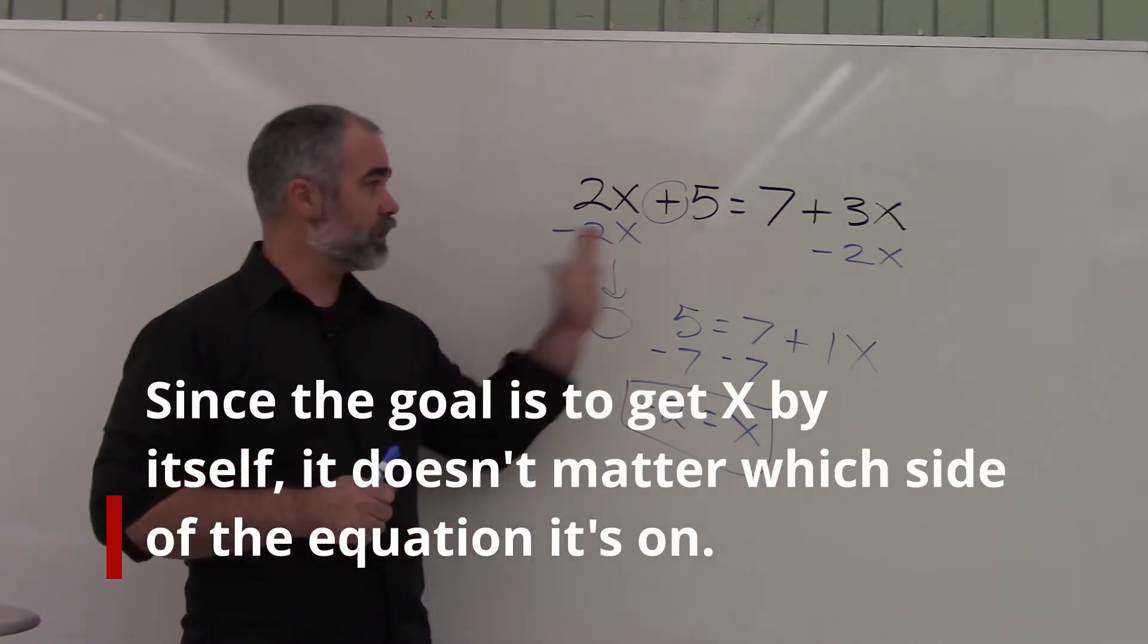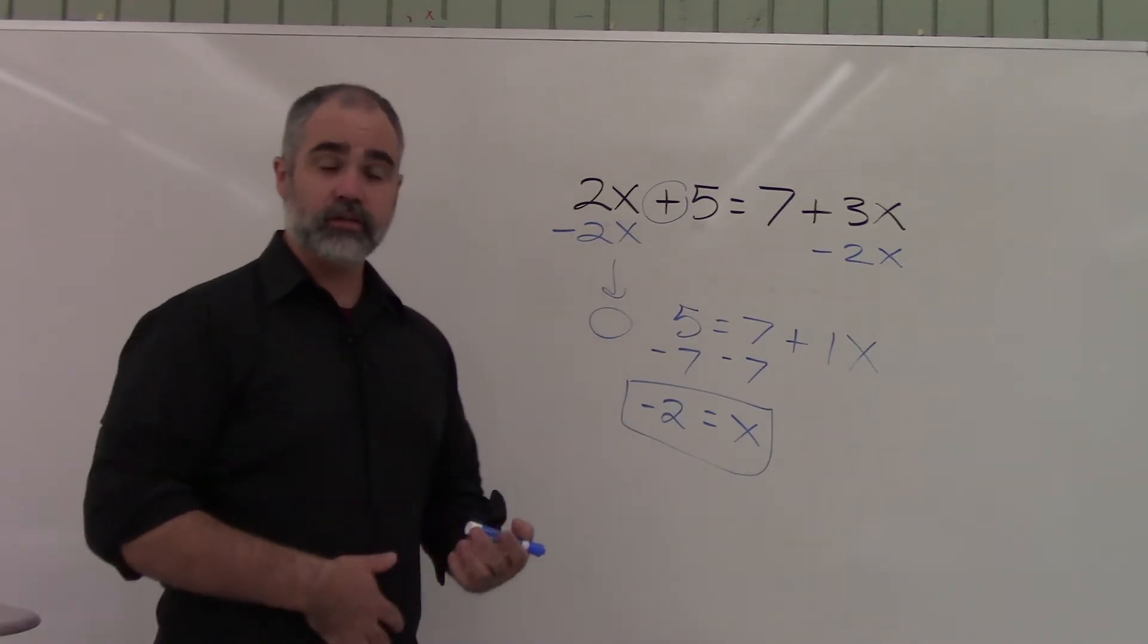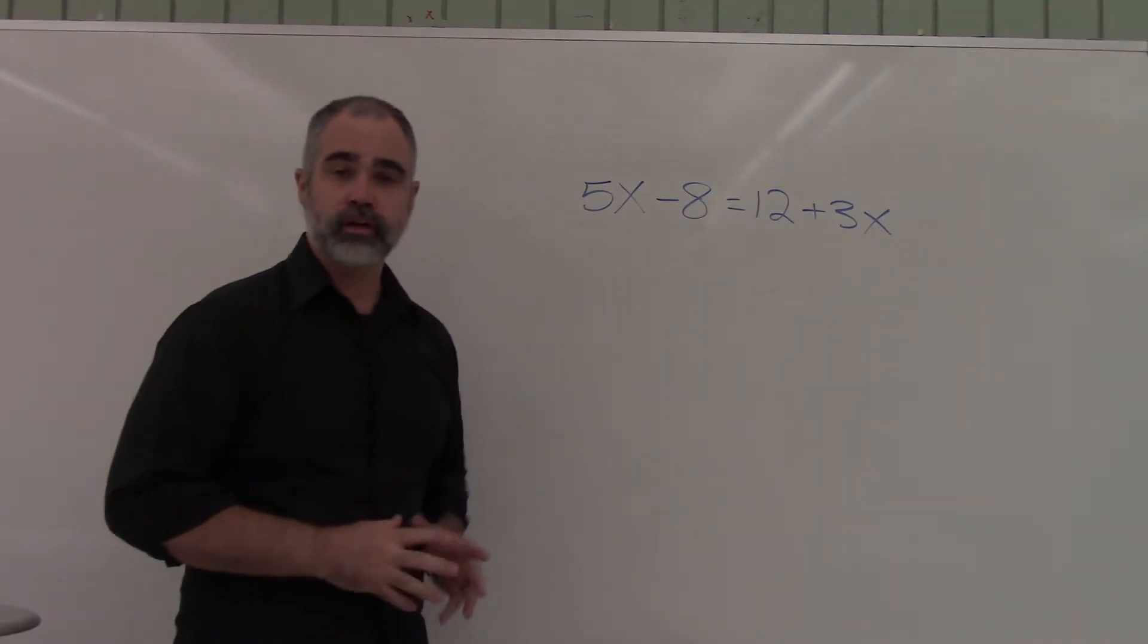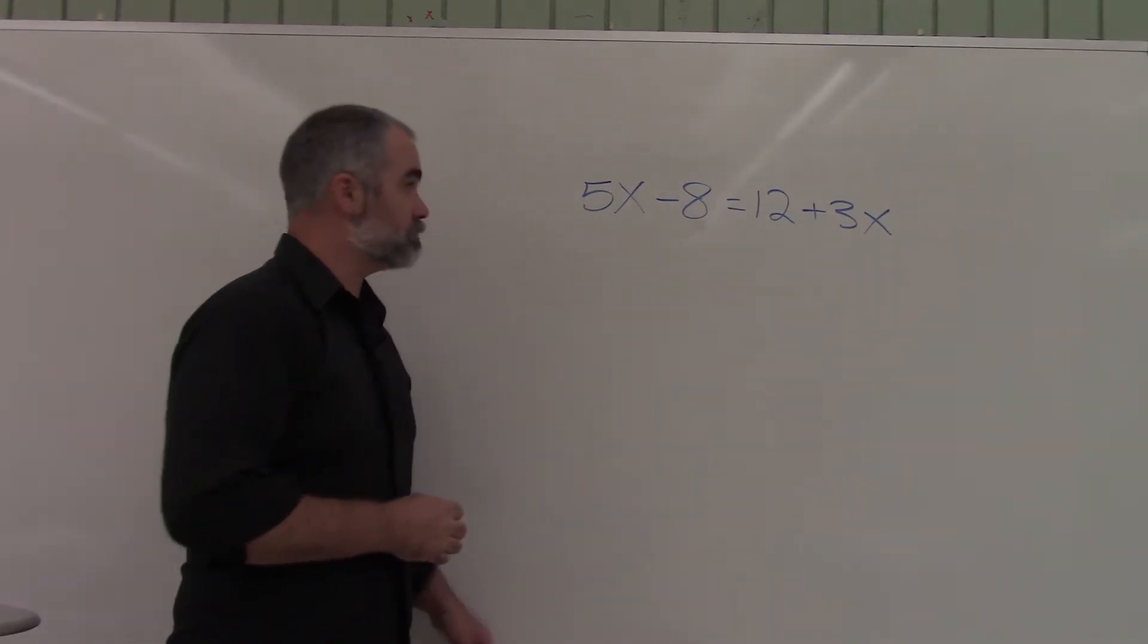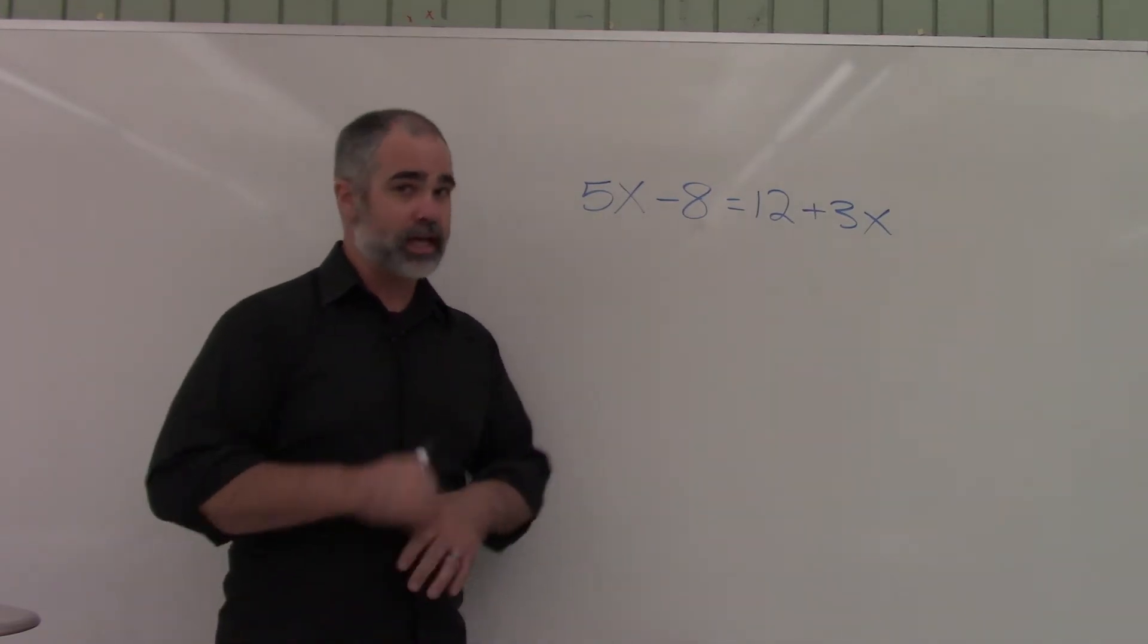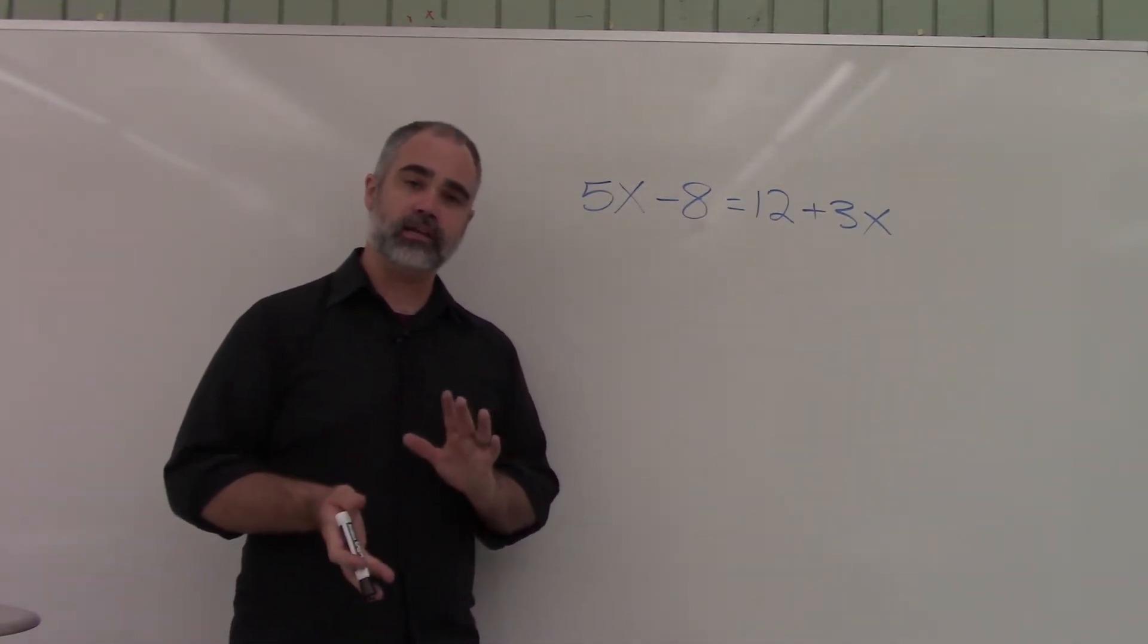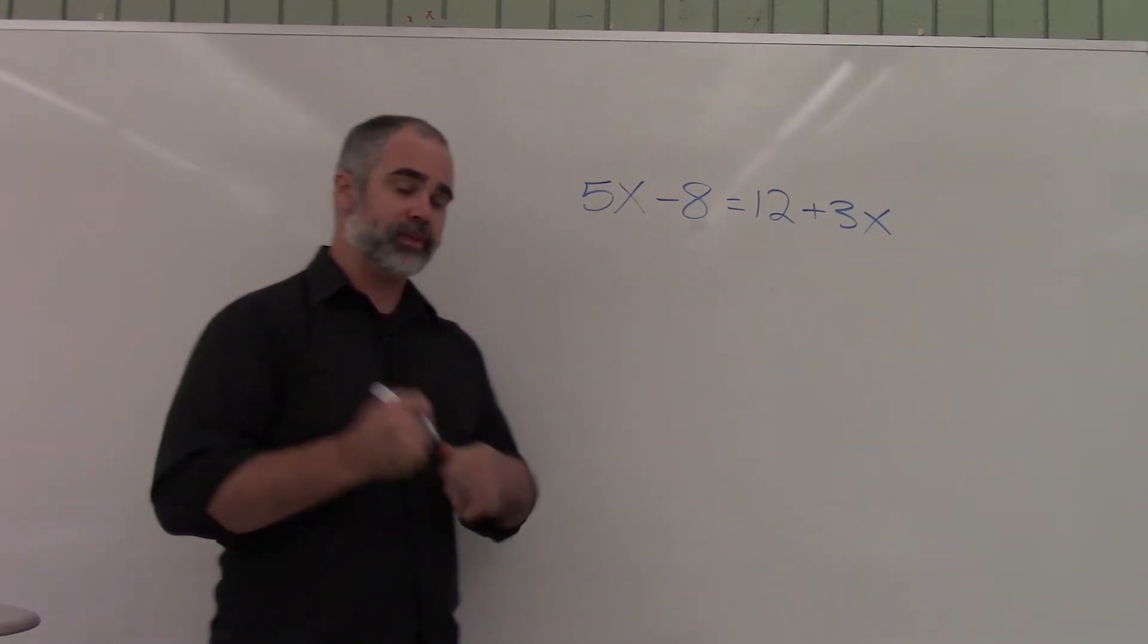So if you have a variable on both sides, you can still combine like terms, just like we did in the previous one. So here is the next kind of question that you might see that's a little tricky. Remember, we've got x's on both sides. Same situation. But let me show you what happens here. And it can trip you up.